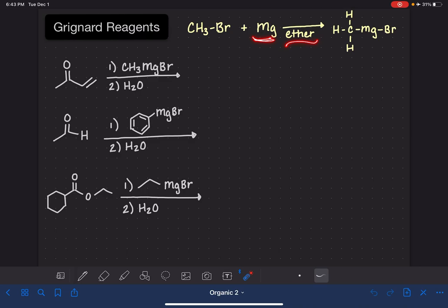When you mix an alkyl halide with pure magnesium in an ether solvent, you get a type of molecule that is called a Grignard reagent. A Grignard reagent is unique because it has a carbon-magnesium-bromine bond.